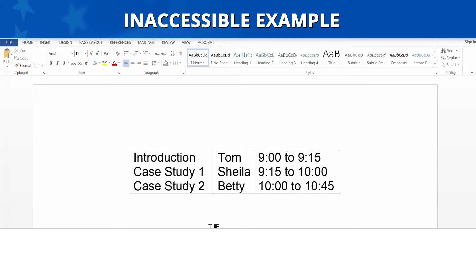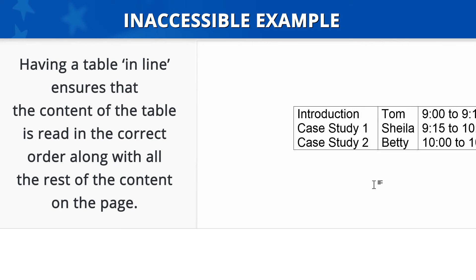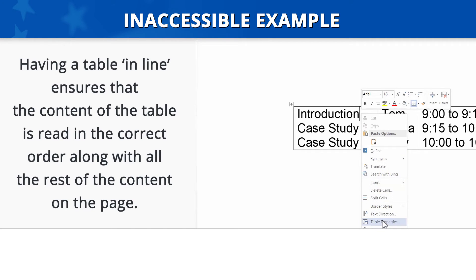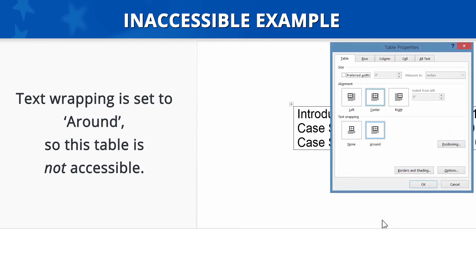We also need to verify that the layout table is in line. Having a table in line anchors it on the page so that a screen reader will read it in the correct position along with the other content on the page. Just as we need to ensure the content inside the table is read in the correct order, we also need to ensure that the table content is read in the correct order along with the rest of the page content. To verify if a table is in line, select the table, right-click, and go to Table Properties. On the Table tab, text wrapping is set to Around — the correct setting is None — so this table is not accessible.